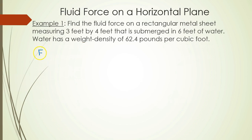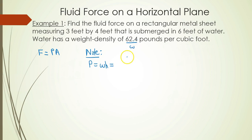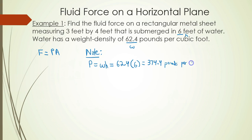From Pascal's principle, force equals pressure times area. First we need pressure, which equals W times H. Weight density W is 62.4 pounds per cubic foot, and the depth H is 6 feet. Multiplying the two together gives us a pressure of 374.4 pounds per square foot.